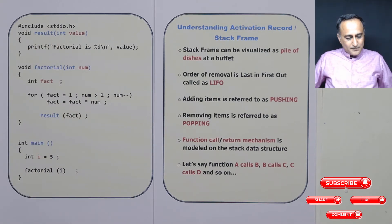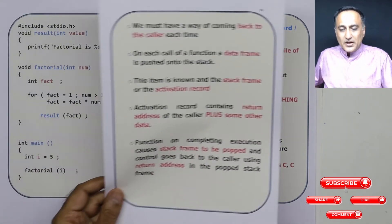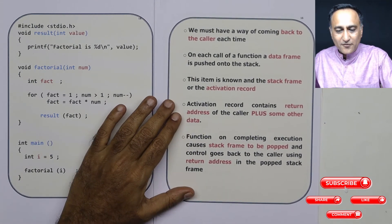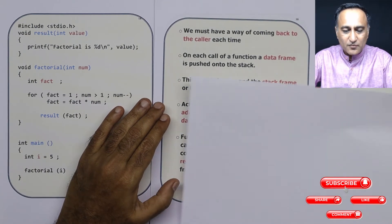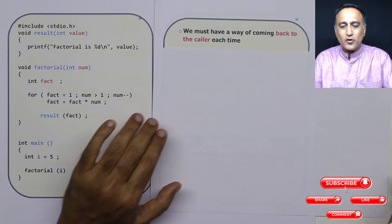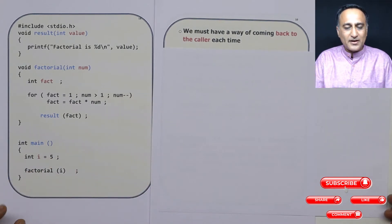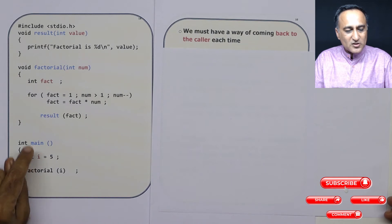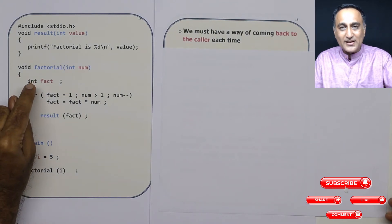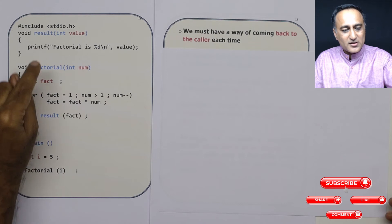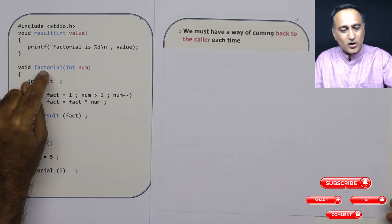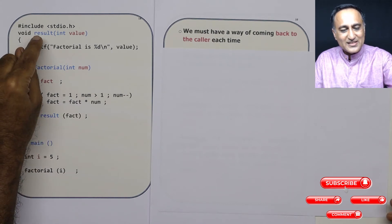It is very important that when a function is called, after it finishes execution we should be able to come back to the caller. Main is calling factorial, so main is the caller and factorial is the callee. Factorial is calling result, so in that case factorial is the caller and result is the callee.